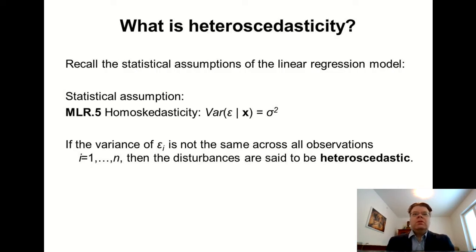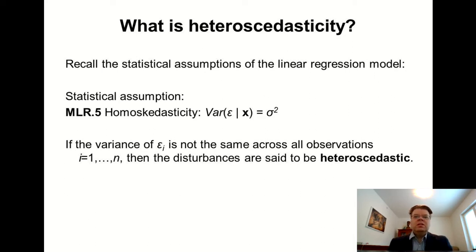Firstly, let's focus on heteroscedasticity. Recall from theme number three, when we discussed the statistical assumptions of the linear regression model, one of the assumptions was homoscedasticity, which states that the variance of the error term epsilon is constant across all observations. Heteroscedasticity is generally defined as the failure of this assumption. If homoscedasticity doesn't hold, then we have a heteroscedastic error term — the variance is not the same across all observations.